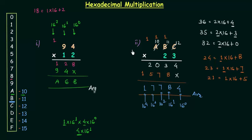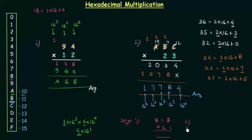I think these two problems are enough to explain hexadecimal multiplication. Now we will move to the homework problems. In the first homework problem you have to multiply 818 by 21. In the second problem you have to multiply DAF by 54. So this is all for this presentation — see you in the next one.